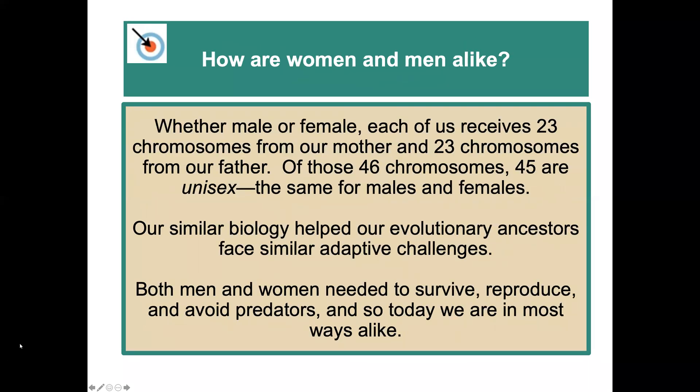How are men and women alike? In many ways. Whether male or female, each of us receives 23 chromosomes from our mother and 23 chromosomes from our father. Of those 46 chromosomes, 45 are unisex — the same for males and females — so that's a big overlap of similarity. Our similar biology helped our evolutionary ancestors face similar adaptive challenges. Both men and women need to survive, reproduce, and avoid predators — all the things that kept us safe over our evolutionary history.